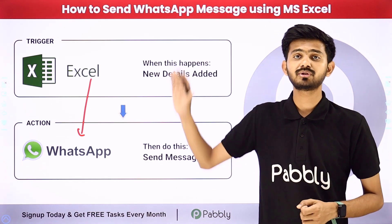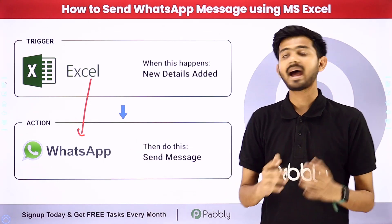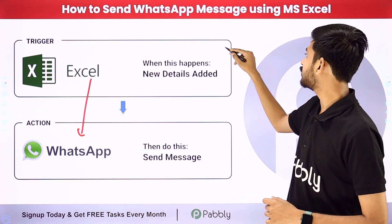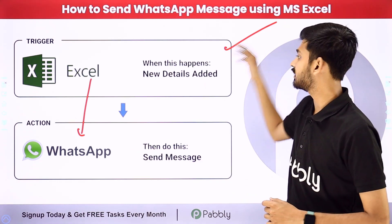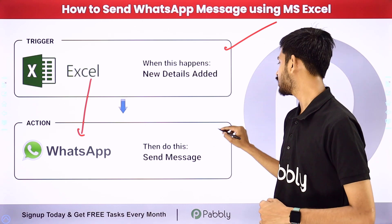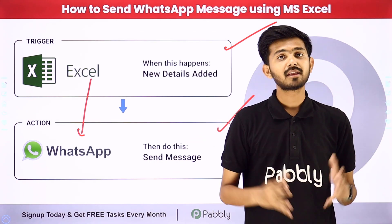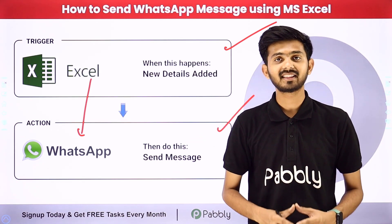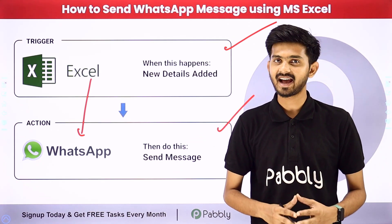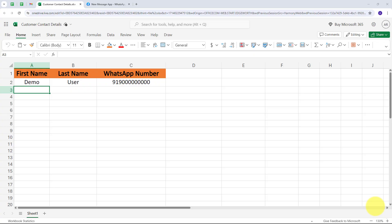In Pabbly Connect, I have to use Trigger and Action. In the Trigger application, I am going to use Microsoft Excel. In the Action application, I am going to use WhatsApp Cloud API. Now let me take you to my computer screen to show how I am going to build this connection.